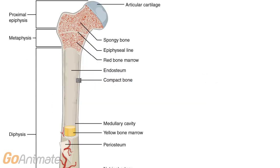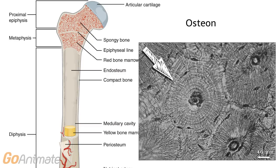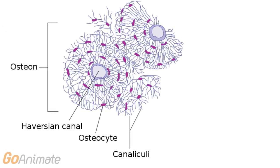Compact bone is found in the margins of long bones and is arranged in structural units called osteons, or Haversian systems. Each osteon contains concentric rings called lamellae arranged around a central canal. Small canaliculi create an interconnected network. Central canals are connected to each other via transverse or diagonal perforating, or Volkmann's canals.